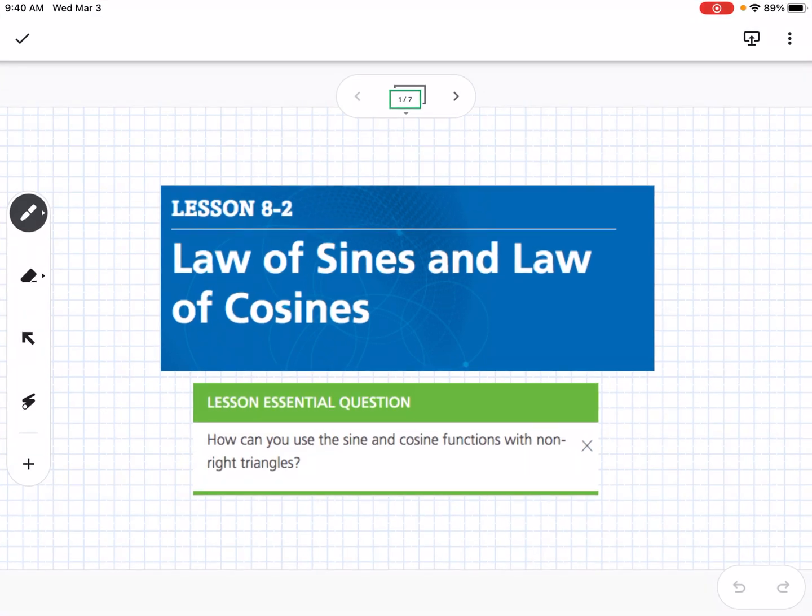This is Lesson 8-2, which is Law of Sines and Law of Cosines. Our essential question is, how can you use the sine and cosine functions with non-right triangles? So everything we've done so far with trig has been right triangles, but we know in real life we have a lot of triangles that are not right triangles. So Law of Sines and Law of Cosines is a way to find missing sides or angles of triangles that don't have a 90-degree angle in them.